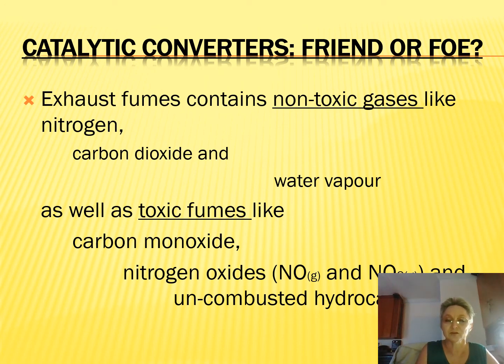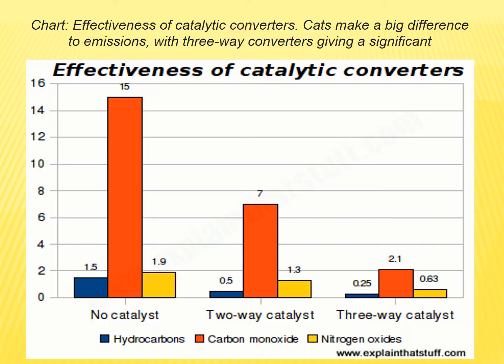Next, I'll show you a graph that shows you the effectiveness of catalytic converters. Here is a graph showing you the effectiveness of catalytic converters. You'll see that you get three-way and two-way converters. And I think it's quite clear that the converter changes the situation of emissions of dangerous gases or toxic gases into the atmosphere.